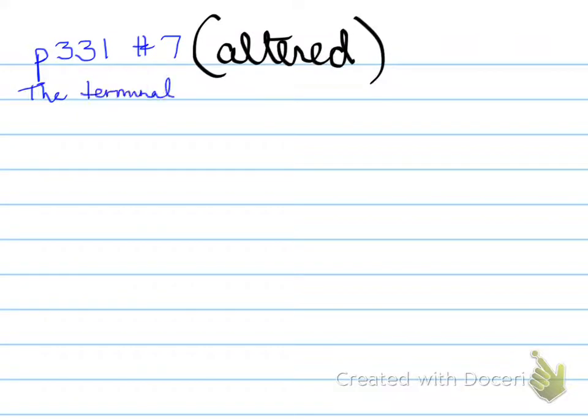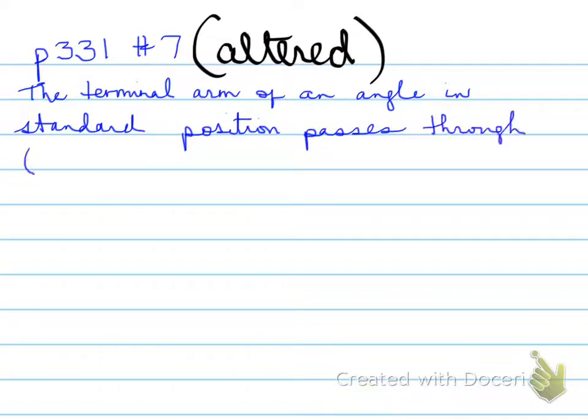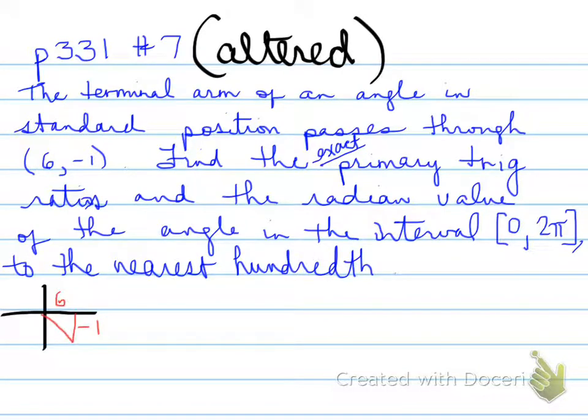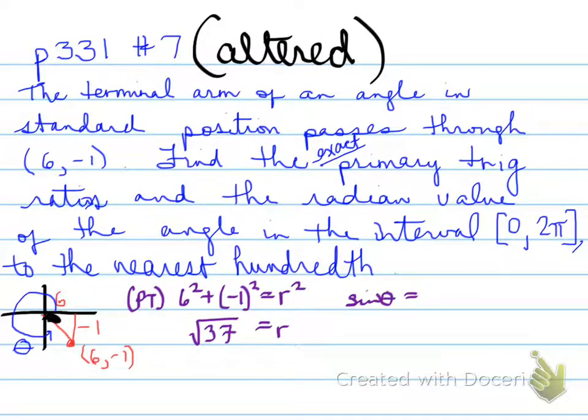Now here's some examples. Page 331, number 7, which I altered just a little bit. The terminal arm of an angle in standard position passes through a certain point. Find the primary trigonometric ratios and the radius value of the angle in the interval from 0 to 2π. So 6, -1 is located in the fourth quadrant, and you need to find the exact primary trigonometric ratios. To do that, we need to find the R value. So using Pythagorean theorem, we find the value of R. R is equal to the square root of 37.